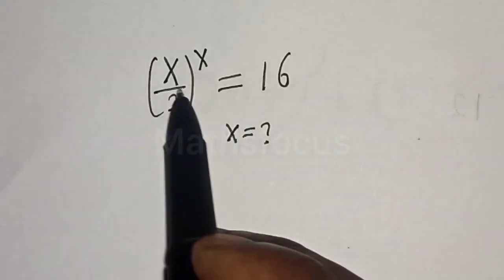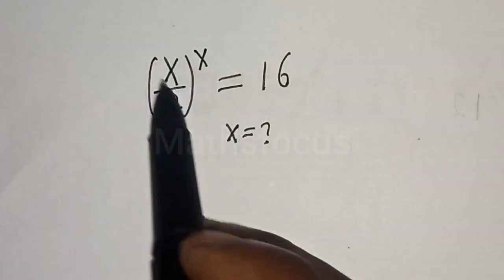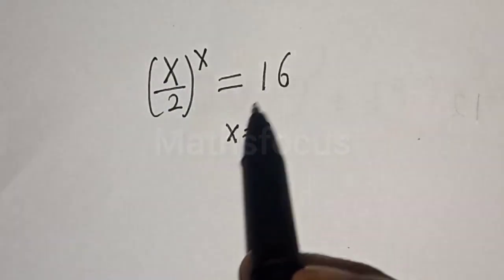Hello, we want to find the value of S from this equation: S divided by 2, to the power of X, equals 16.